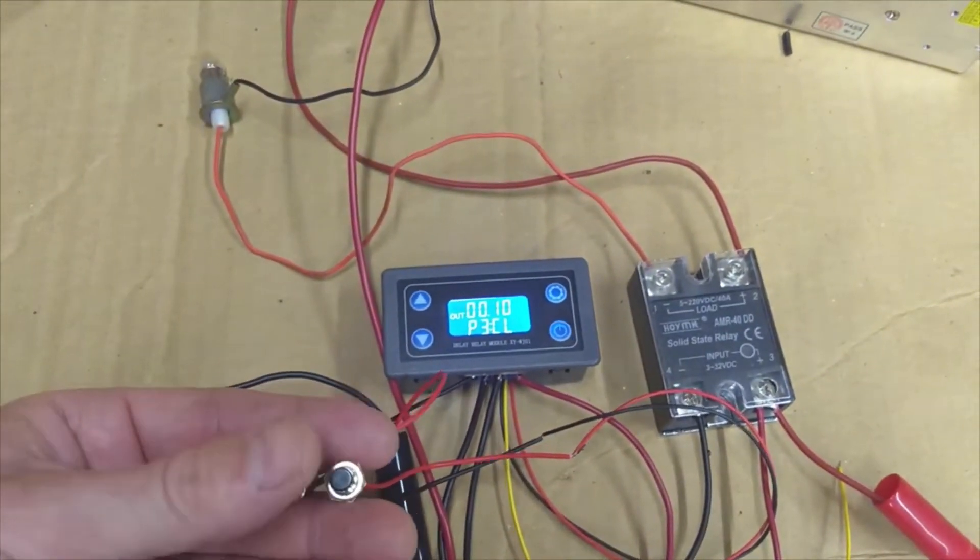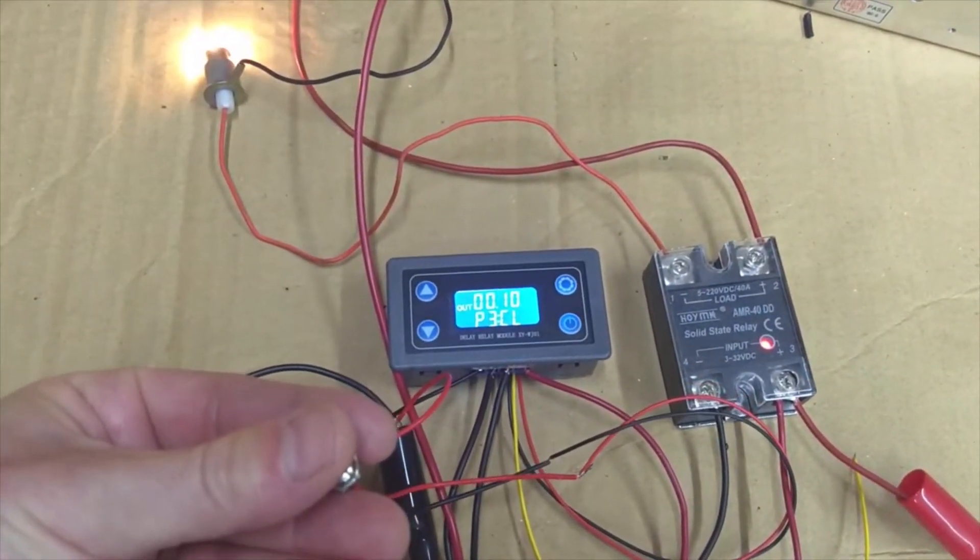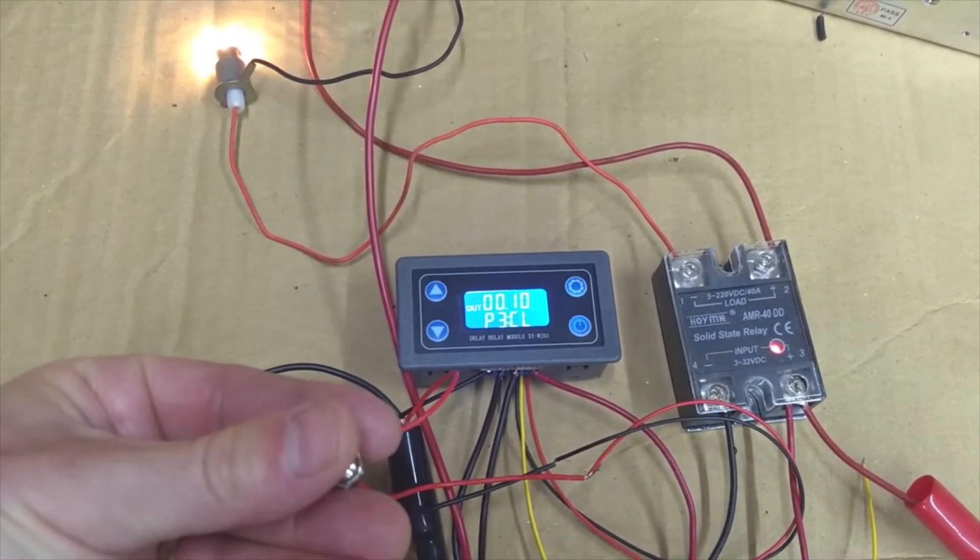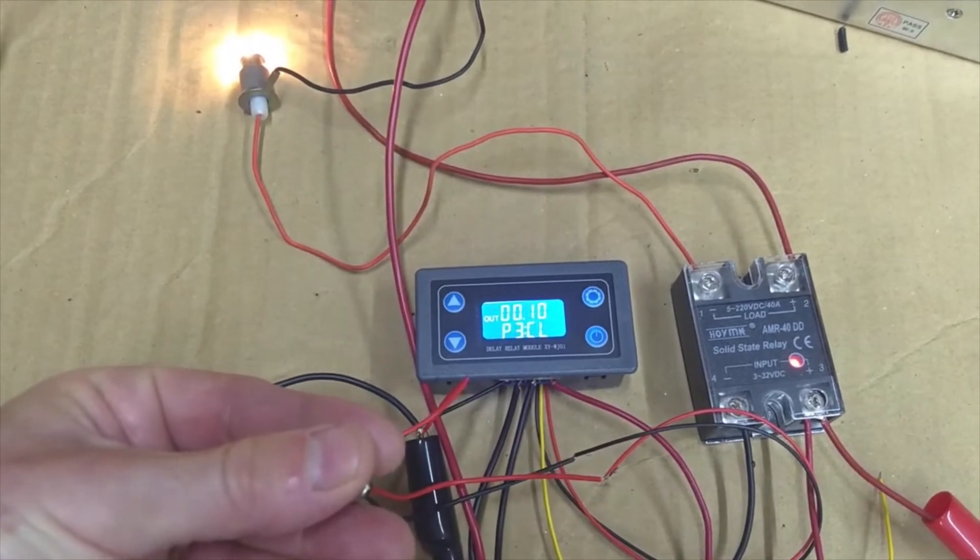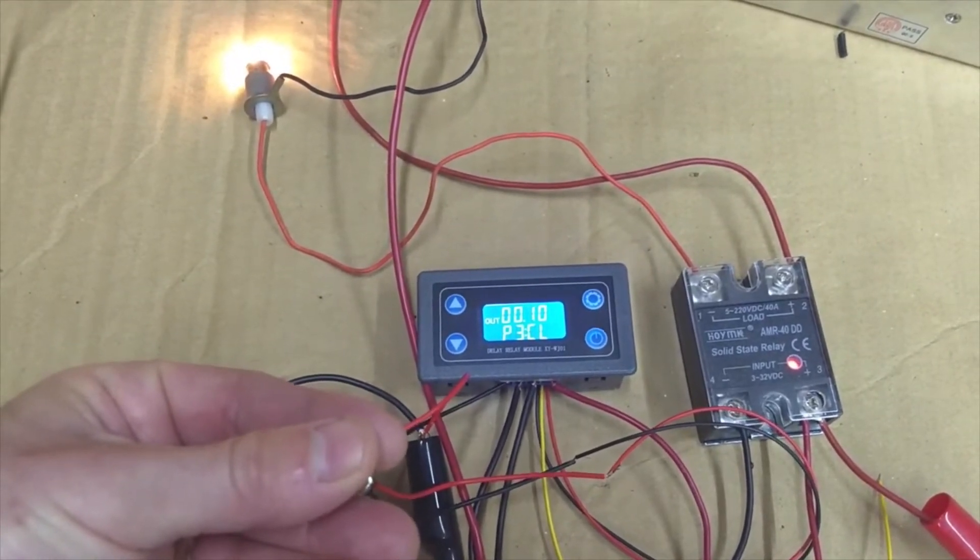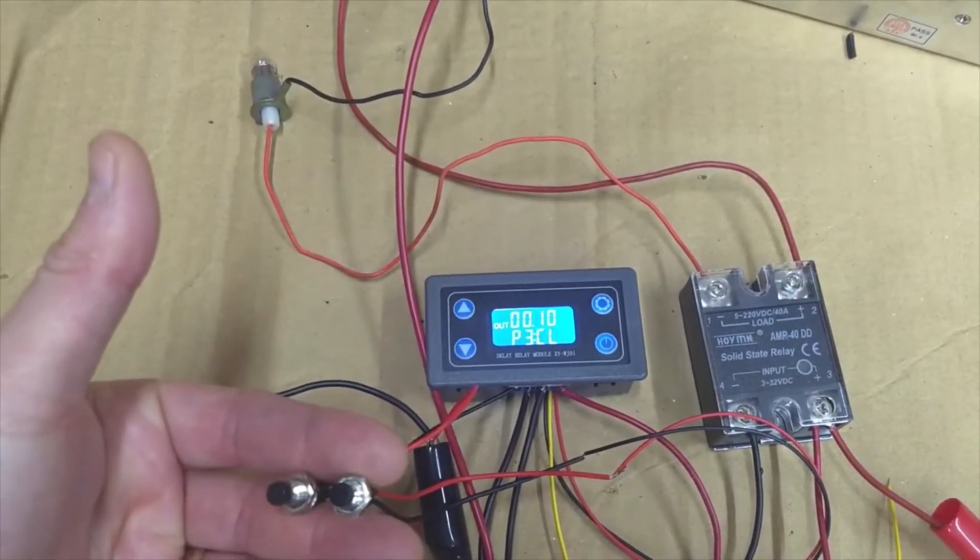So if you were staging you would engage your trans brake with the first button and then if you need to bump you just press the second button. You need to bump again, press it again, and then when you're ready to launch you just let off the trans brake button.